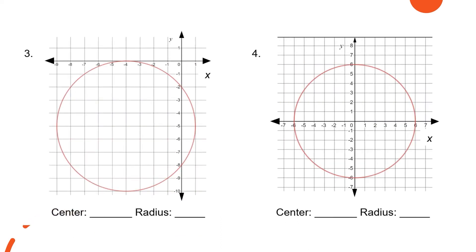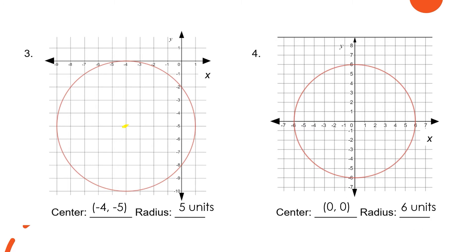For example number 3, our center is at (-4, -5). That is the location of the center. From there, we can count how many units upward, downward, or sideways, and our radius would be 5 units. For the last item, the center is at the origin and the radius is 6 units.